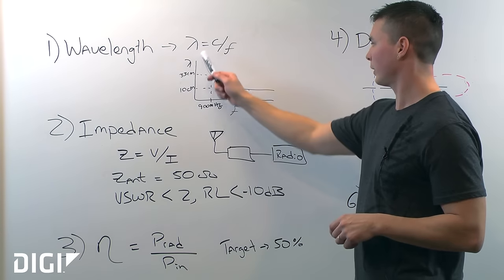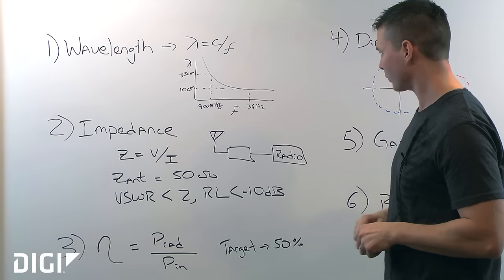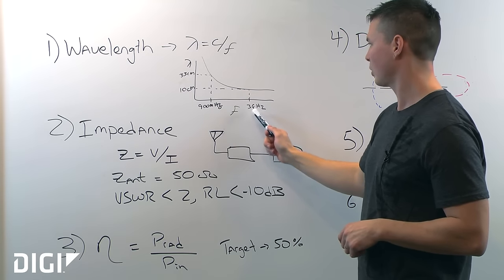Starting off with wavelength, which is defined as the speed of light over frequency, we can see that as frequency increases, wavelength decreases.